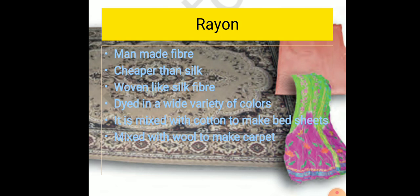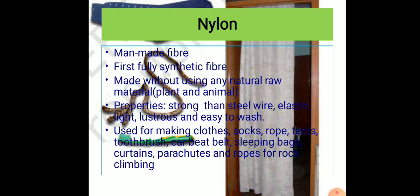Next is nylon. Nylon is another man-made synthetic fiber. In 1931, it was made without using any natural raw material. To make this, sources like plants and animals were not used. It was prepared from coal, water, and air, making it the first fully synthetic fiber made without using natural sources like plants and animals.